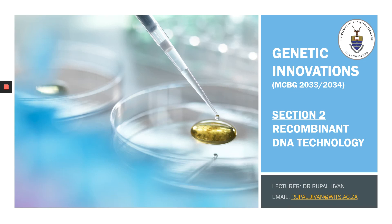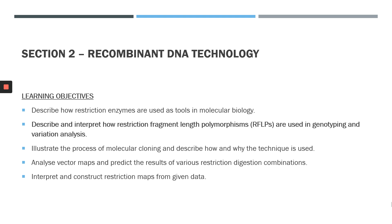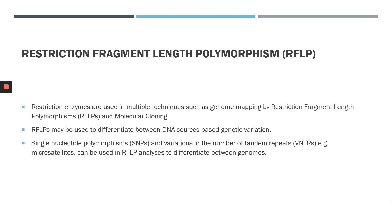Hi genetic innovation students, and welcome to your second lecture in section 2 on recombinant DNA technology. In this lecture we will be focusing on the second learning objective, which is to describe and interpret how restriction fragment length polymorphisms are used in genotyping and variation analysis. We concluded the previous lecture discussing restriction enzymes and ended off by talking about how they can be used in multiple techniques such as RFLPs and molecular cloning.